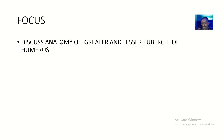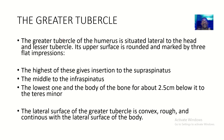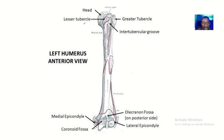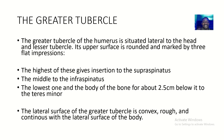The greater tubercle of the humerus is situated lateral to the head and the lesser tubercle. Its upper surface is rounded and marked by three flat impressions. The highest impression gives insertion to the supraspinatus, the middle impression gives insertion to the infraspinatus, while the lower impression gives insertion to the teres minor.